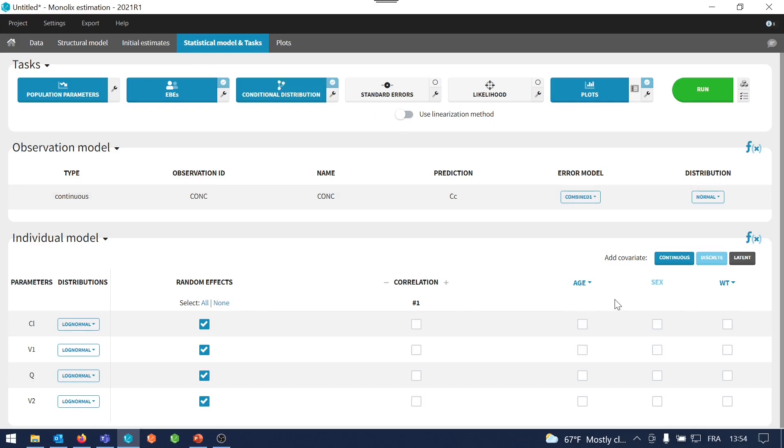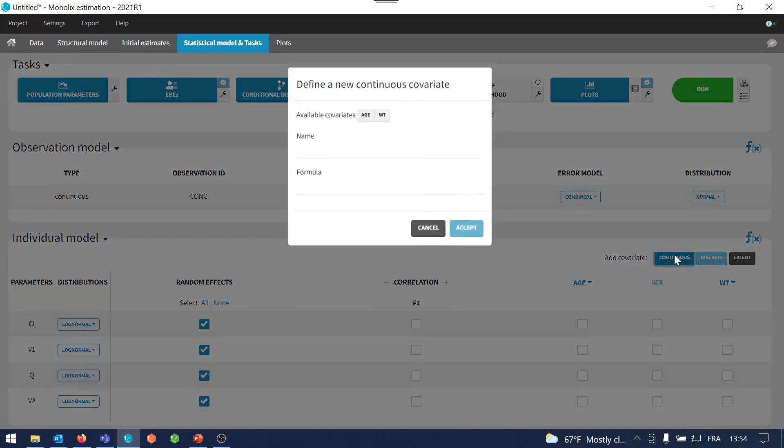To replace the missing age values, I will create a new continuous covariate that corresponds to the age column, except that the minus 99 values will be replaced by a more meaningful imputed value. To do this, there is a formula. Let's see which formula we need to input here.